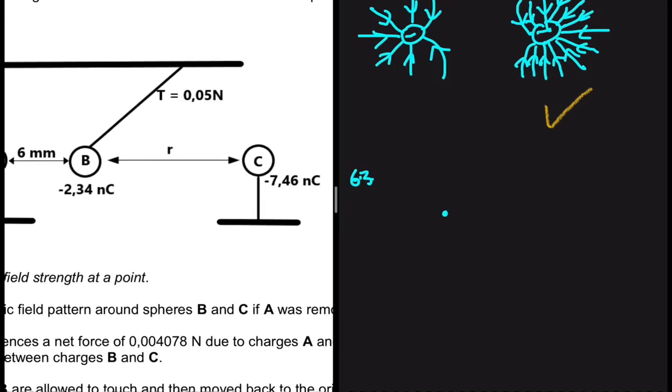So B is negatively charged. C is negatively charged. That tells us that they're going to repel, like we have deduced in 6.2. So C will be pushing B to the left. So this is F of C on B.